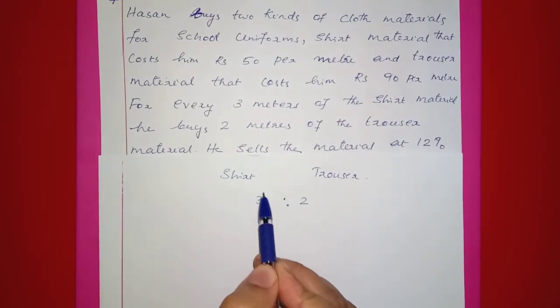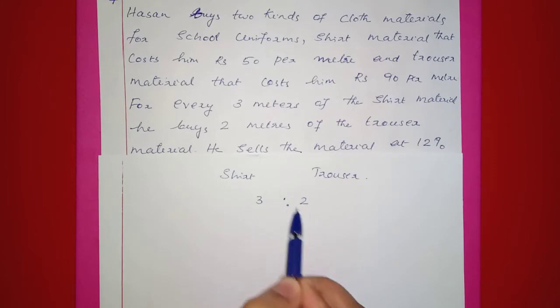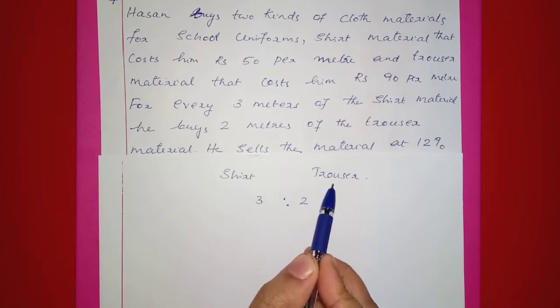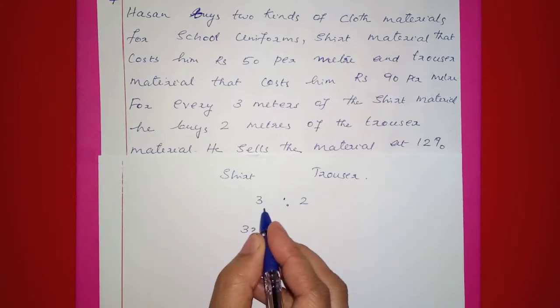So we have 3 meters of the shirt material and 2 meters of the trouser material. Now, if we look at the ratio of the total cost: